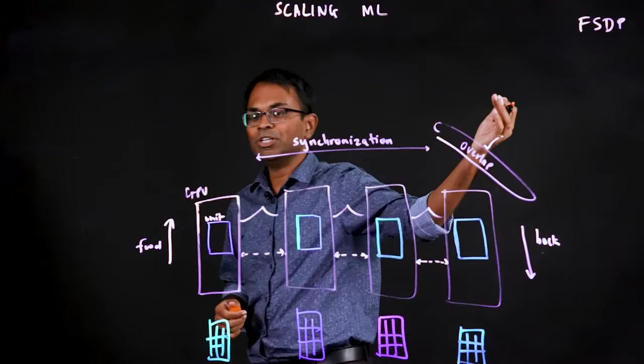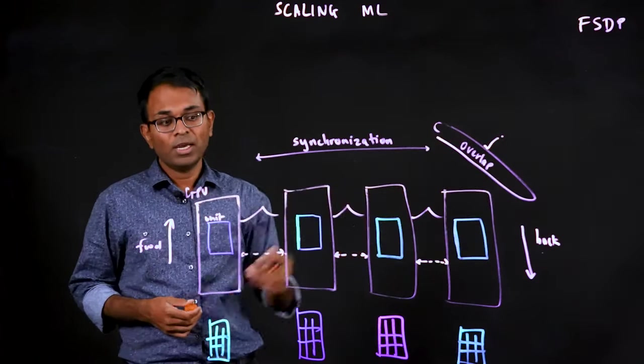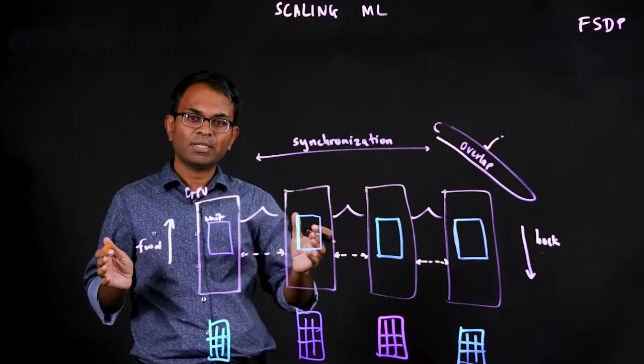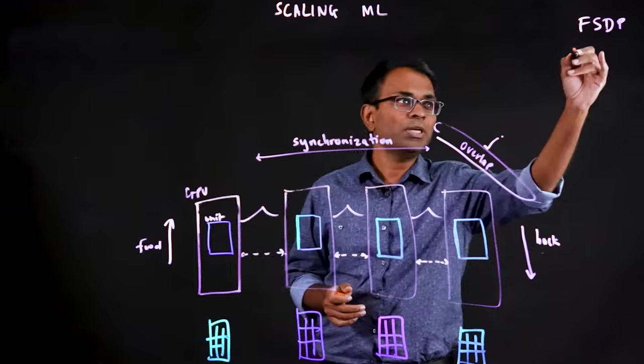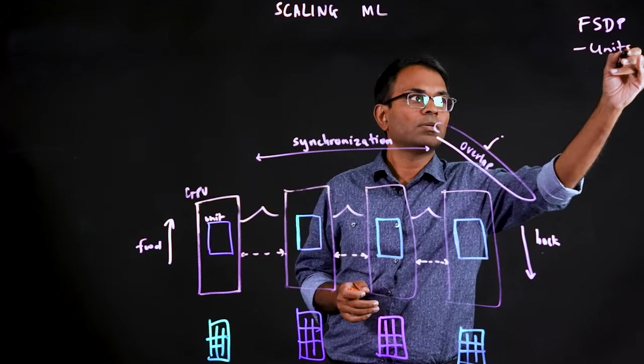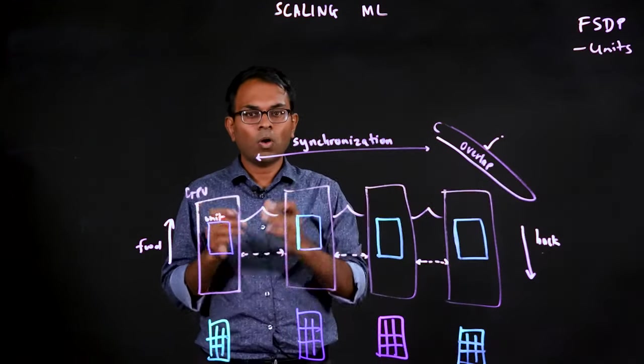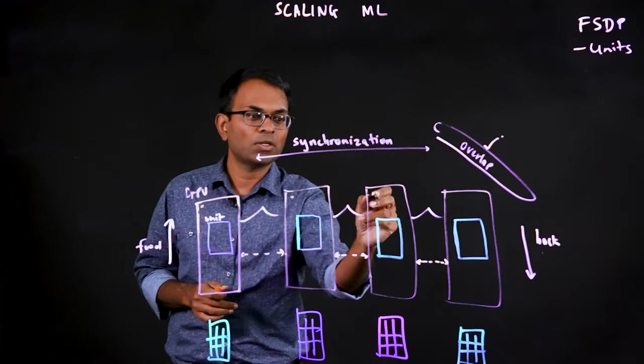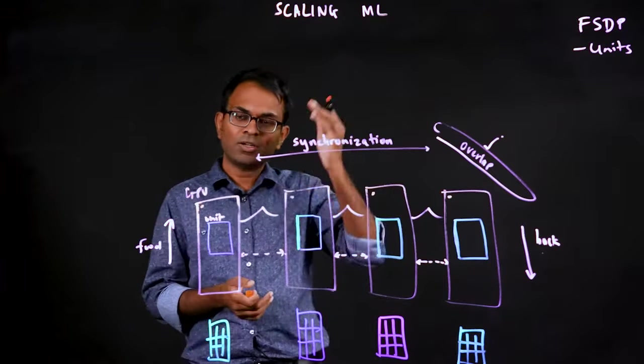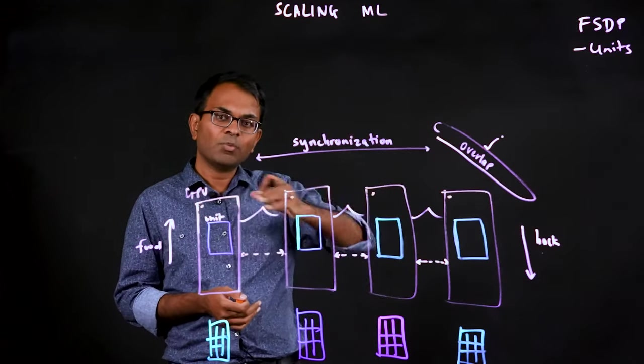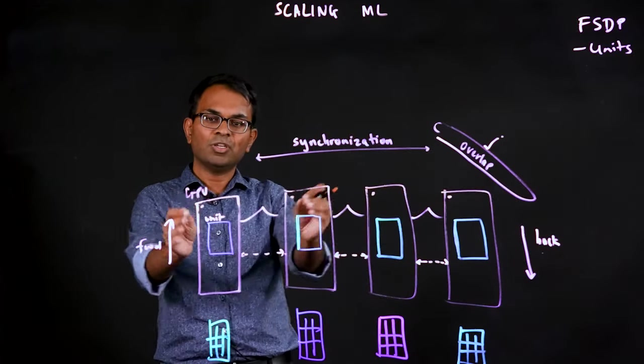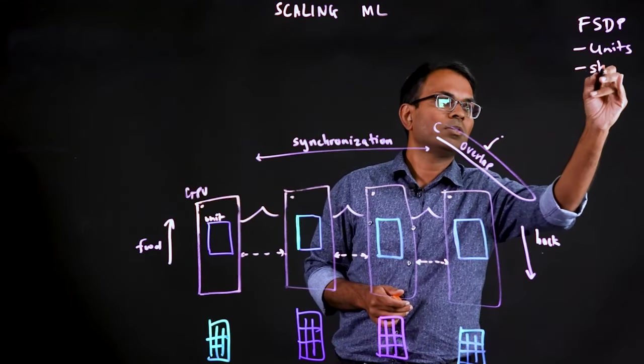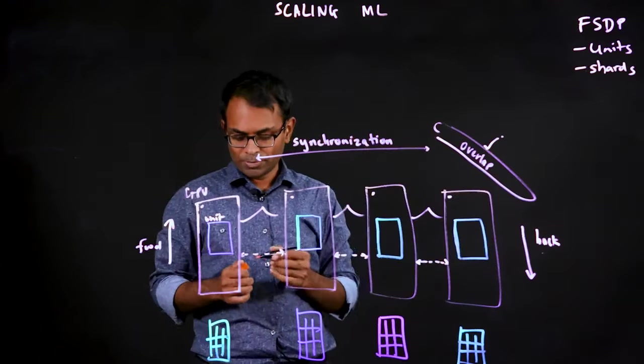FSDP stands for fully sharded data parallel. And what fully sharded data parallel does is it takes the model, breaks it down into what are called as units. And all of these units are then sharded across GPUs. So you can think of it as shredding the model, and then each GPU owns small portions of this model. So that's where your shards are coming in.